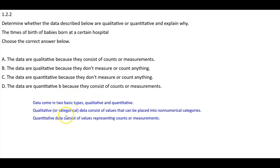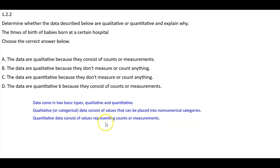Qualitative or categorical data consists of values that can be placed into non-numerical categories. Quantitative data consists of values representing counts or measurements.